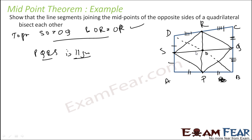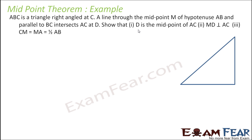Since PQRS is a parallelogram, the diagonals of PQRS — which are PR and SQ — bisect each other. So RO equals OP and SO equals OQ, and that is what we had to prove.